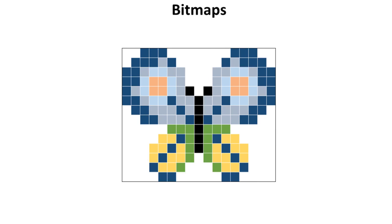We've moved on further and the quality of our picture is increasing because we're adding more colours. But of course the size of the image is increasing too, because for every pixel we now need more bits — there is more depth of colour, more information required to encode each pixel.